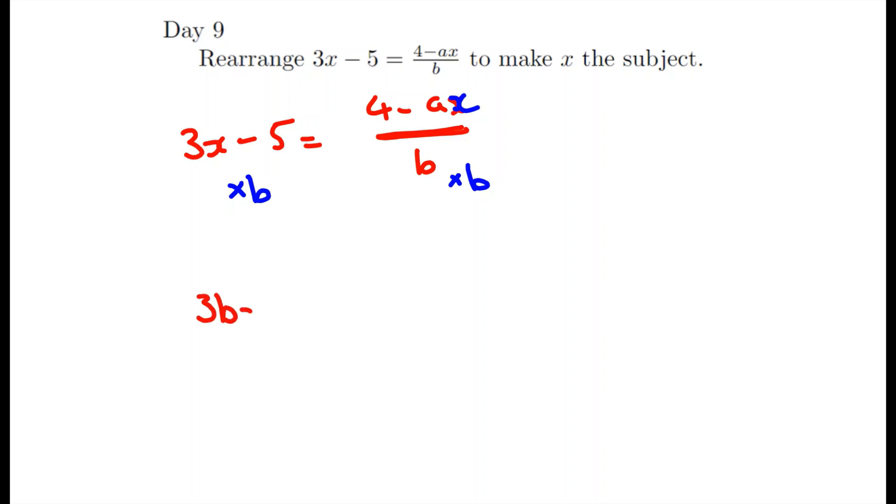So we're going to have 3x multiplied by b, so 3bx. B multiplied by negative 5 minus 5b. And on the right hand side those two just cancel, so it leaves us with 4 take away ax.